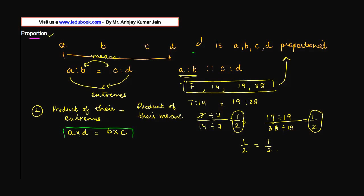So can we verify this? Let us apply this to this particular case. What's the value of A here? 7. What's the value of D? 38 is equal to 14 into 19, C is 19. So if these numbers are proportional, then A into D should be equal to B into C.